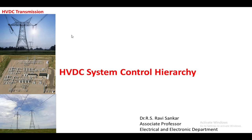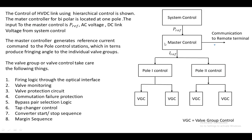Welcome back to the class on HVDC classification systems. In this lecture, we are going to discuss how we control the HVDC system. In an HVDC system, there is a rectifier station as well as an inverter station. To control both stations, we follow a control hierarchy consisting of system control, master control, pole-1 control, and pole-2 control. Pole-1 control is the rectifier station and pole-2 control is the inverter station.